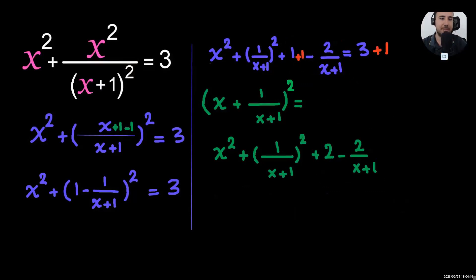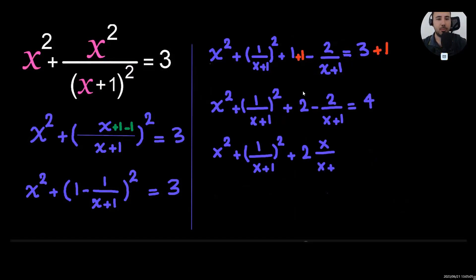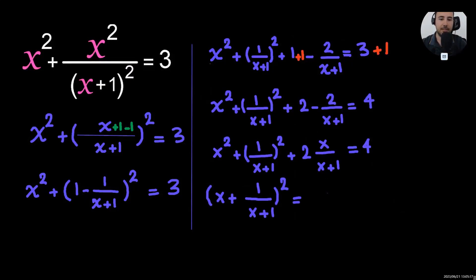And now, the purple equation, the purple one is perfect square. Let's add plus 1 to both sides. And this one, we showed it like a minute ago in the video. Why 2 minus 2 over x plus 1 is this. There you go.